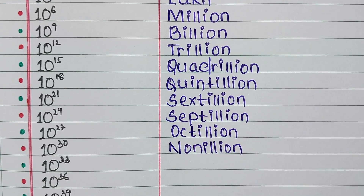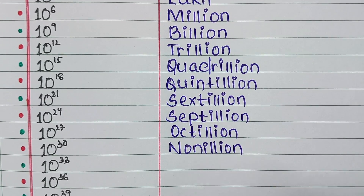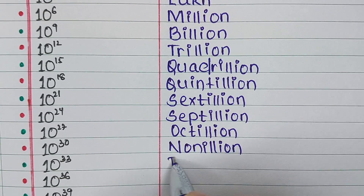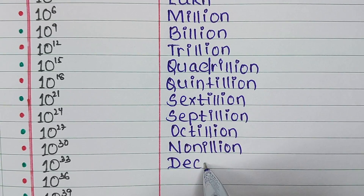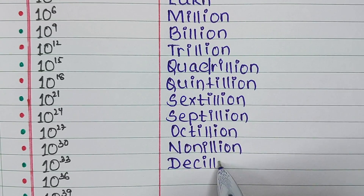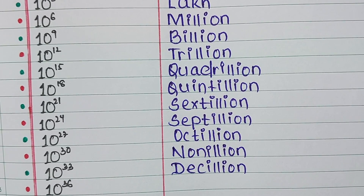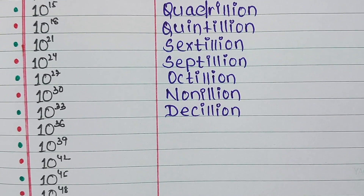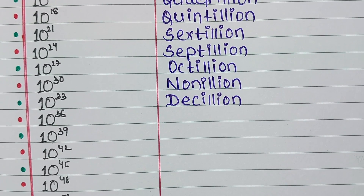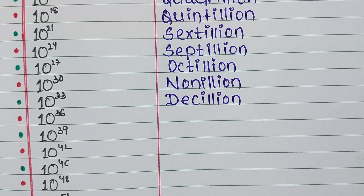Next comes 10 to the power 30. It is called Nonillion. Next is 10 to the power 33. It is called Decillion.